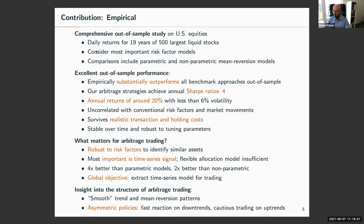We also learn about the economic structure — what is our arbitrageur actually doing, what are they trying to exploit? We show that she's trying to exploit smooth trend and mean reversion patterns, but uses an asymmetric policy: she reacts very fast on downtrends but is more cautious when there's an uptrend in the data.